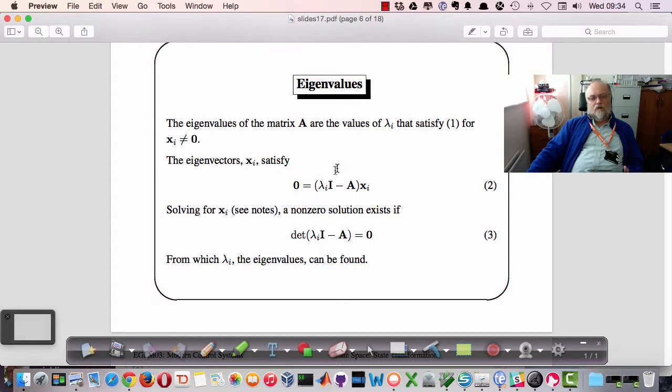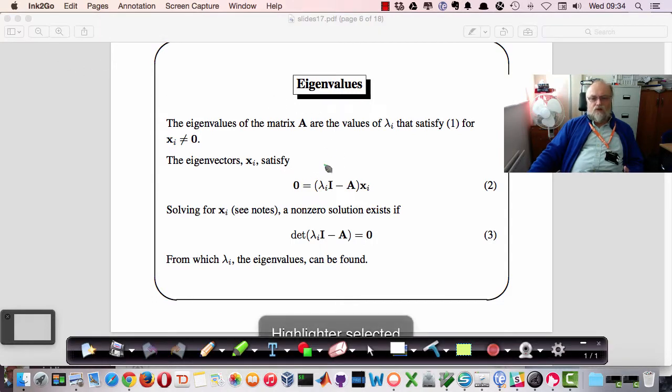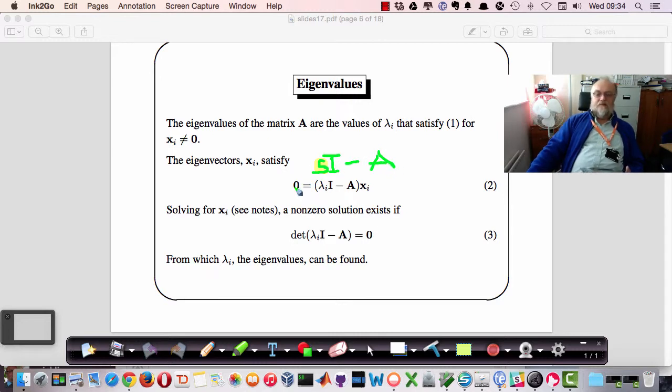So basically this gives us the equations from which the eigenvalues are computed. Now if you are paying attention, if I was to replace that vector by S, you can see S I minus A. We've seen that before in the context of transfer functions, and this is the characteristic equation.